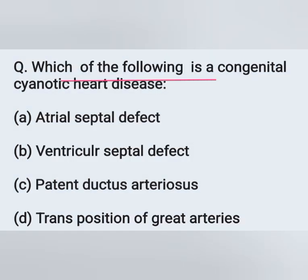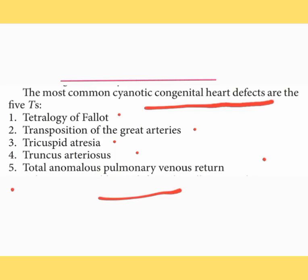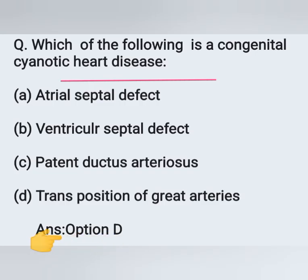Which of the following is a congenital cyanotic heart disease? Option A: atrial septal defect. Option B: ventricular septal defect. Option C: patent ductus arteriosus. Option D: transposition of great arteries. The most common cyanotic congenital heart defects are the 5 T's: tetralogy of Fallot, transposition of great arteries, tricuspid atresia, truncus arteriosus, and total anomalous pulmonary venous return. So the correct answer is Option D: transposition of great arteries.